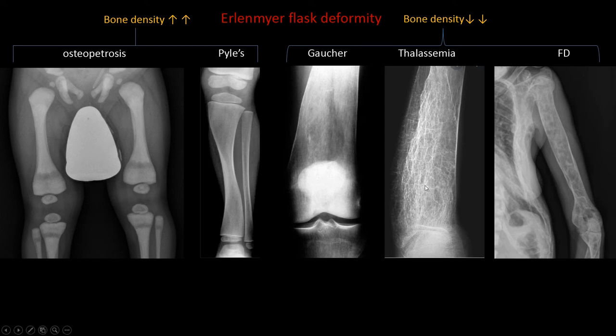In thalassemia, there is characteristic coarse trabeculation giving a cobweb appearance. Ask for a chest radiograph looking for rib coarsening and expansion, cardiomegaly, paraspinal lesions, and splenomegaly. If a skull X-ray is available, look for hair-on-end appearance and widening of the diploic space.